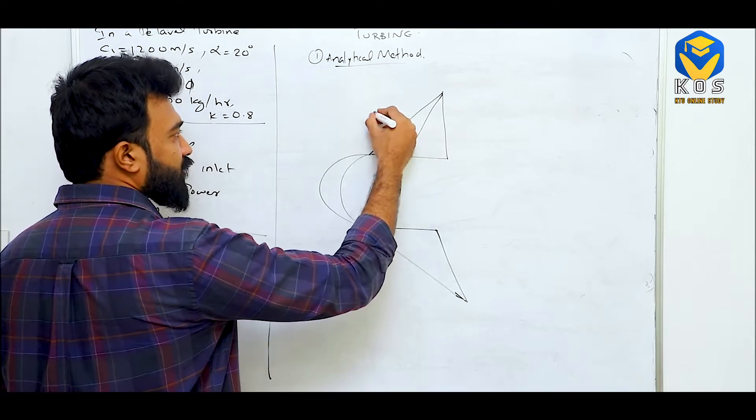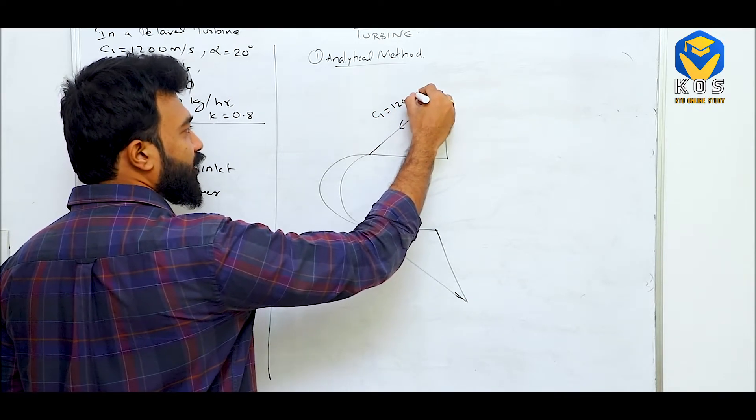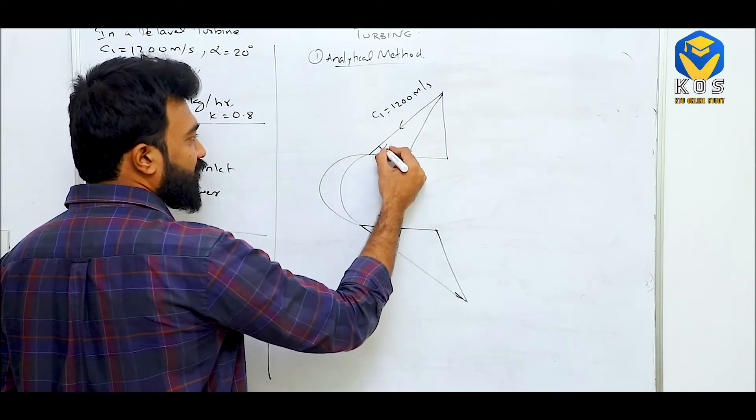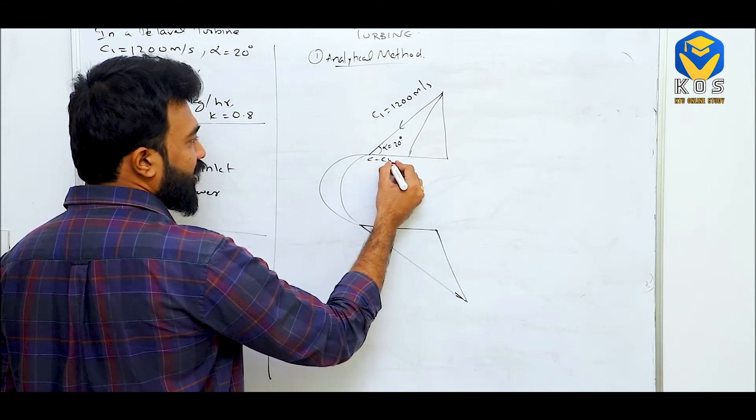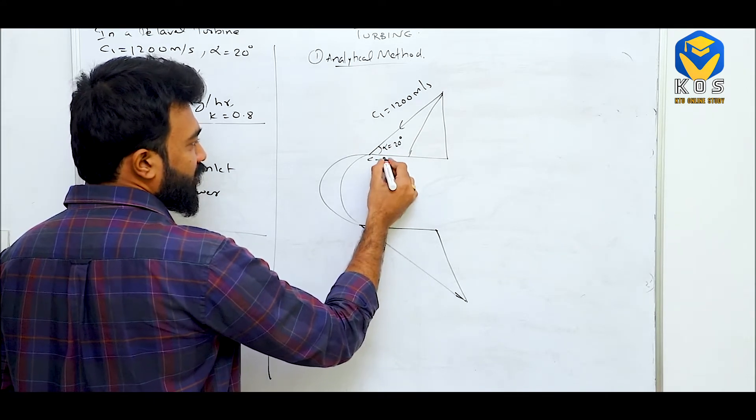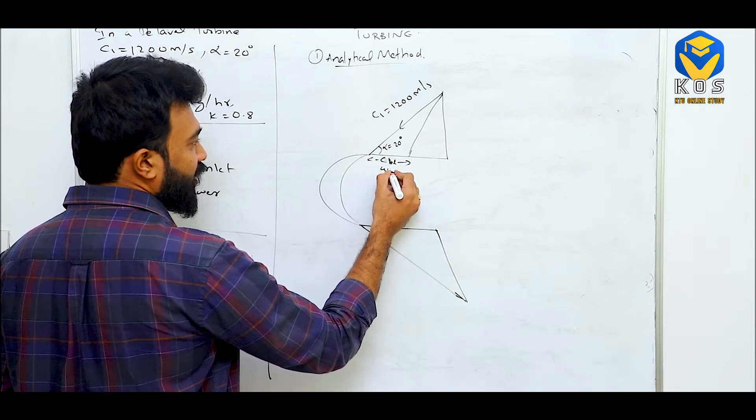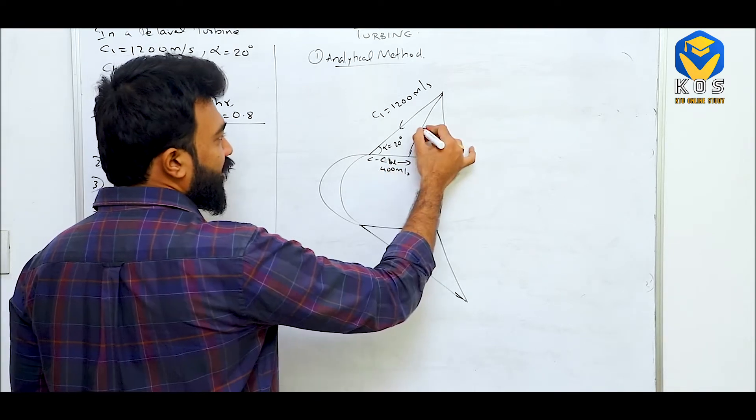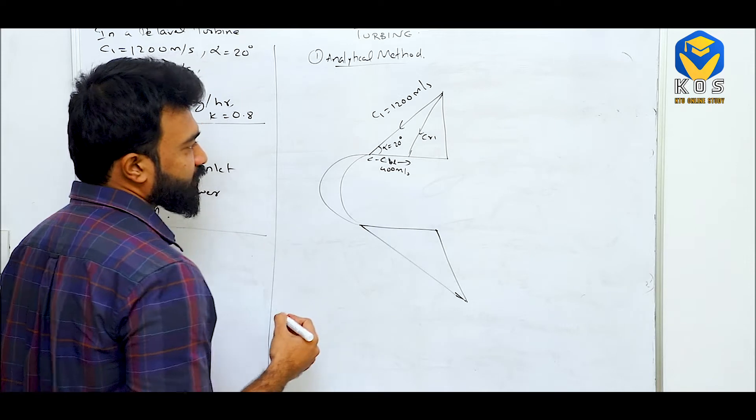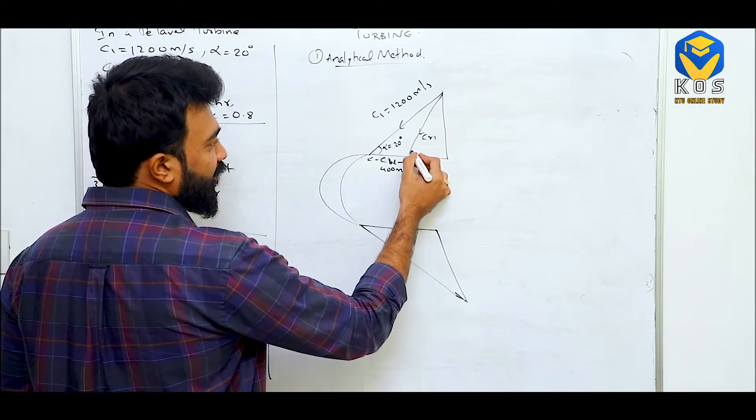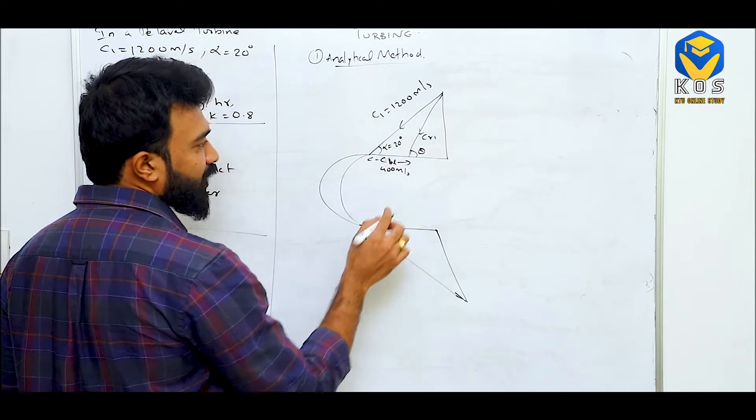This means C1 is given as 1200 meter per second. This alpha is 20 degree, and this distance is given as CBL, which is given as 400 meter per second. We need to calculate CR1 first. CR1 is calculated. This angle is theta. Blade angle is 10.